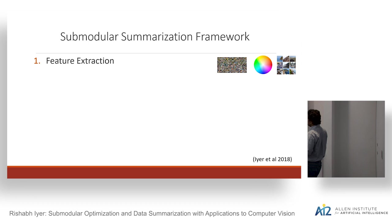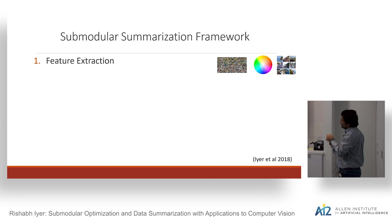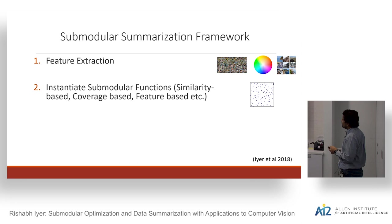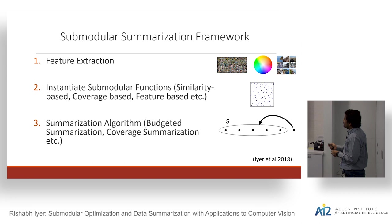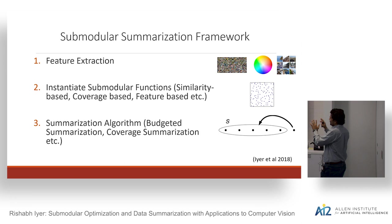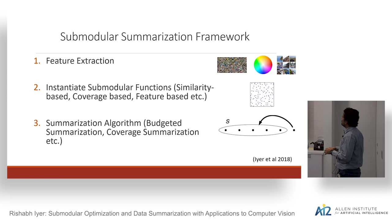The basic pipeline: first extract features — color features, object features, scene features, etc. Using these features you instantiate the submodular functions: similarity-based, coverage-based, feature-based. Once instantiated, you run the summarization algorithm — whether budgeted summarization, coverage summarization, etc. The real question is how to instantiate these for different applications.